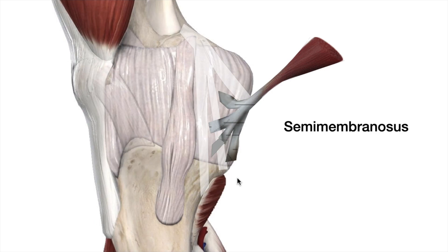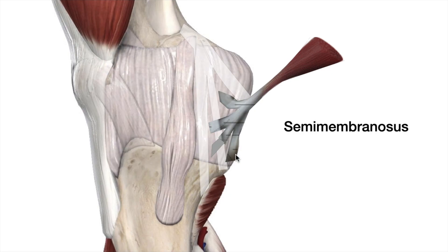The next structure is the semimembranosus muscle, discussed in detail in the previous video. The capsular arm of the semimembranosus and the capsular arm of the posterior oblique ligament are visible here. Between the capsular arm and the central arm runs the semimembranosus extension that inserts over the capsule. Between the central and distal arms runs the deep head and the direct head of the semimembranosus, inserting into the tibia just distal to the joint line. The distal arm of the semimembranosus and the distal arm of the posterior oblique ligament both insert at the same point and also have insertion over the periosteum of the tibia.